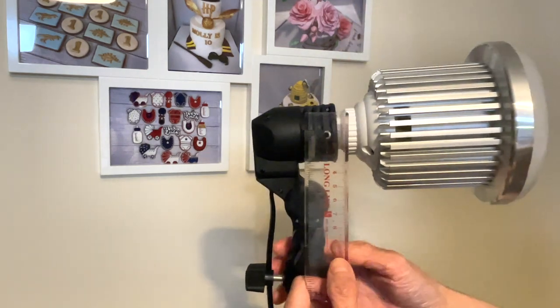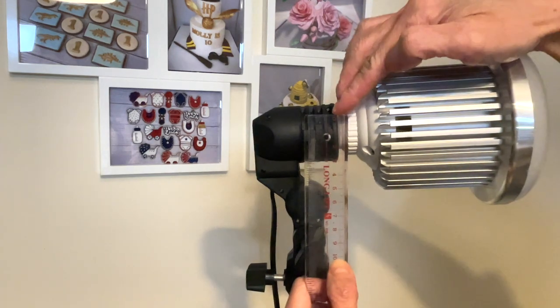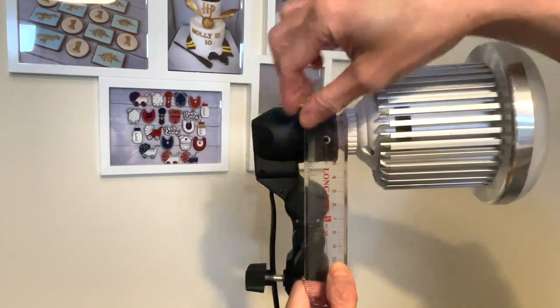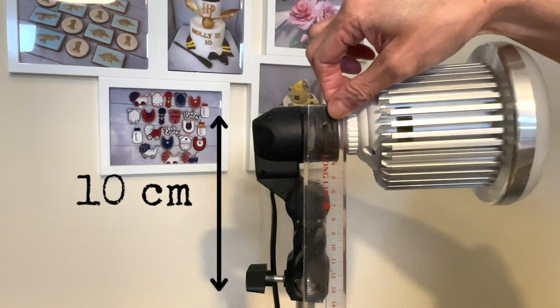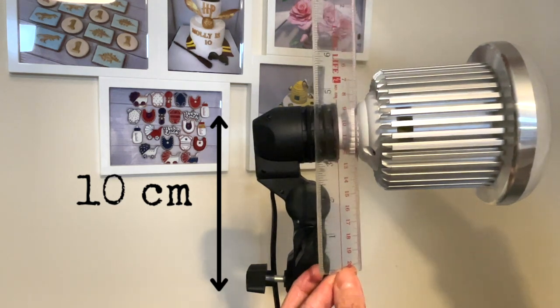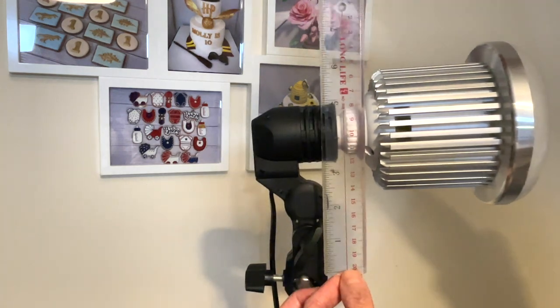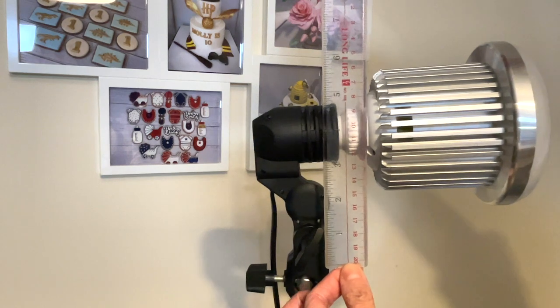After the measurement, I worked out from the light bulb to the tilt part of the stand, which is around 10 centimeters. Now I can decide the base of the softbox is 20 centimeters by 20 centimeters.